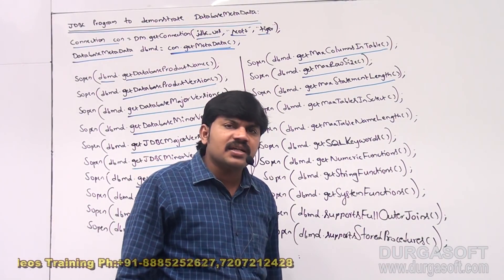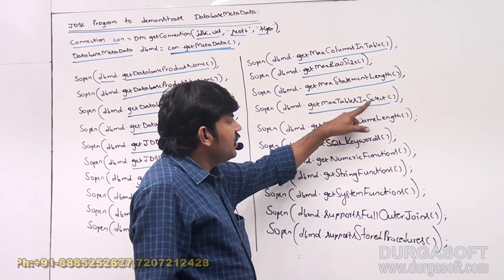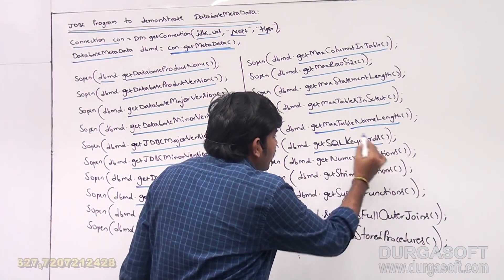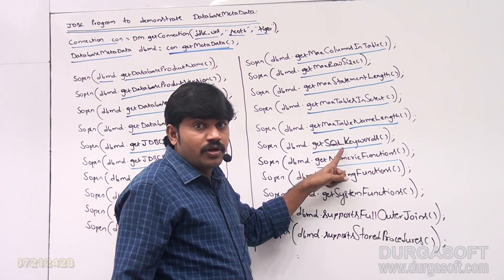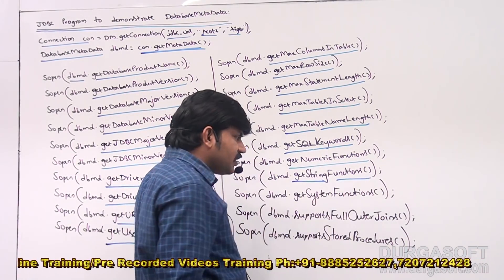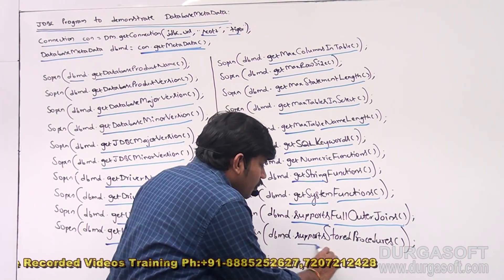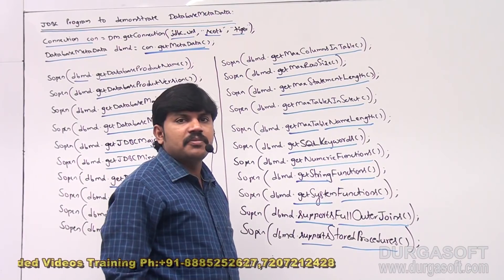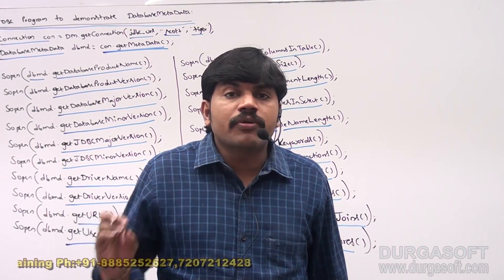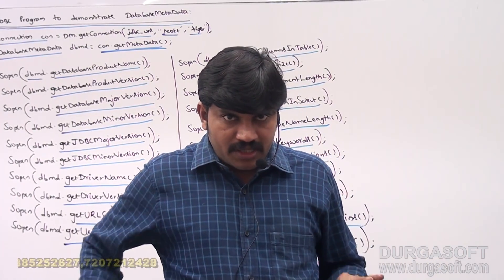Additional methods include getMaxRowSize(), getMaxStatementLength() — the maximum characters allowed in an SQL query, getMaxTablesInSelect() — max tables in a select query, getMaxTableNameLength(), getSQLKeywords(), getNumericFunctions(), getStringFunctions(), getSystemFunctions(), supportsFullOuterJoins(), and supportsStoredProcedures(). This is the complete information available through the DatabaseMetaData object.